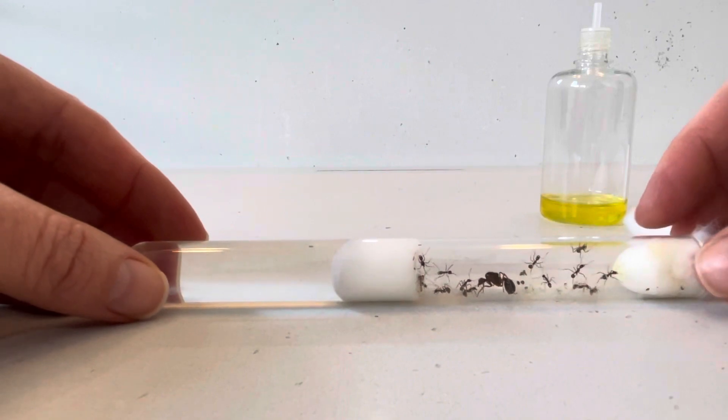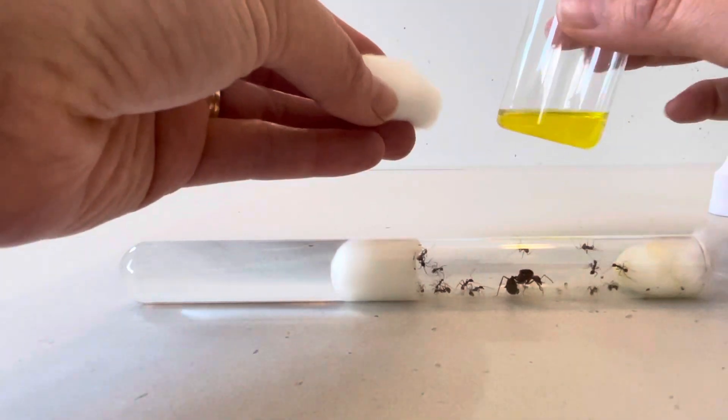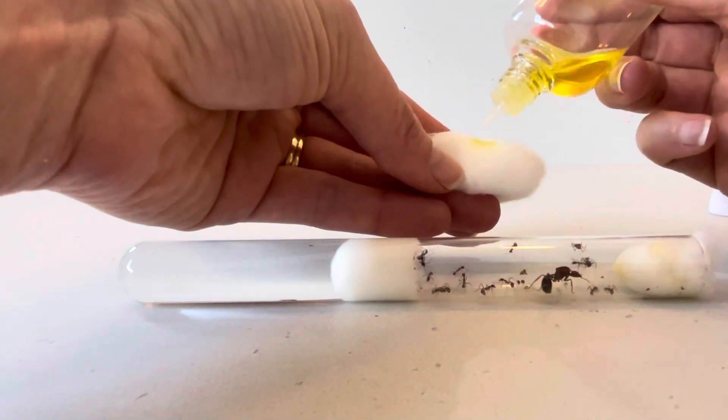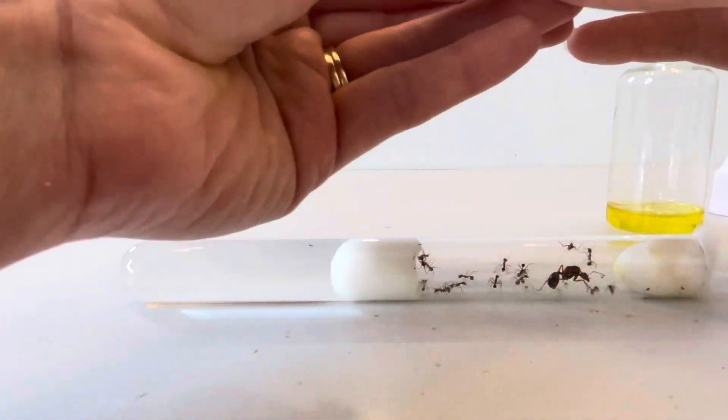So what I like to do is take a fresh cotton ball and a bottle of our ant juice here, and I just put a few drops of ant juice onto the cotton ball like this.